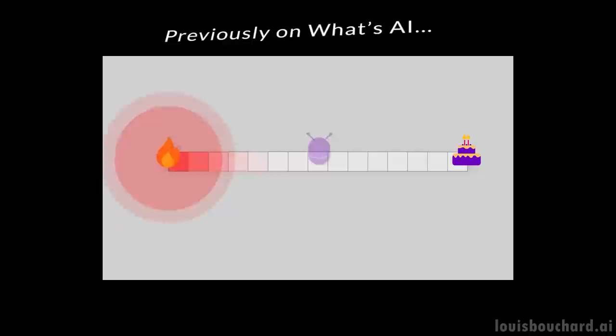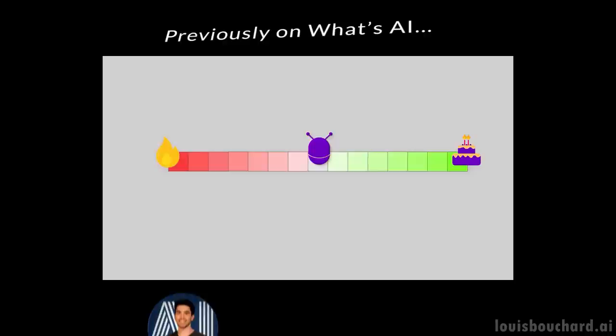Quickly, reinforcement learning is a way to train algorithms by trial and error, aiming for rewards just like humans would do by learning with positive feedback. More specifically, ChatGPT was built following three steps.